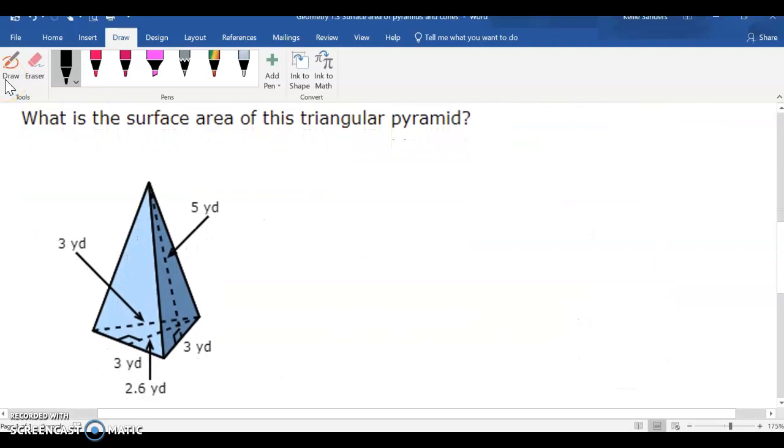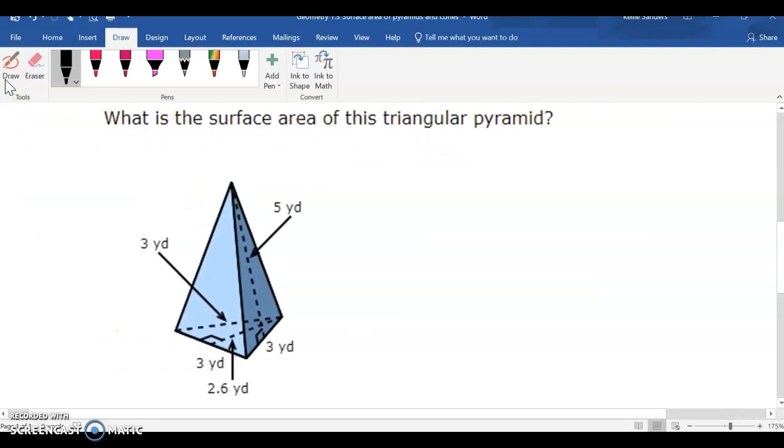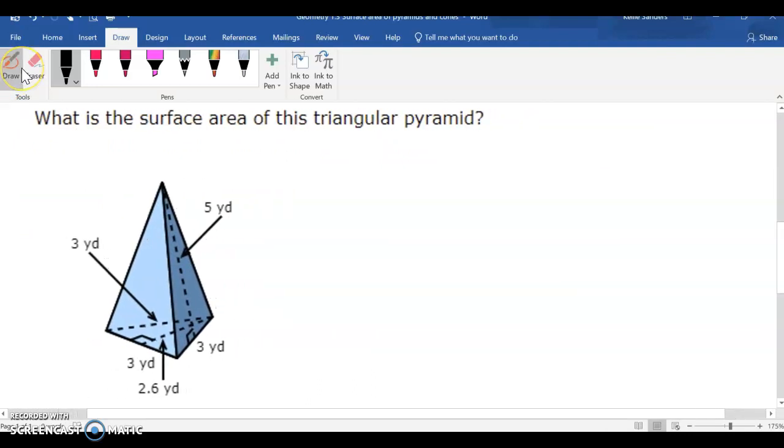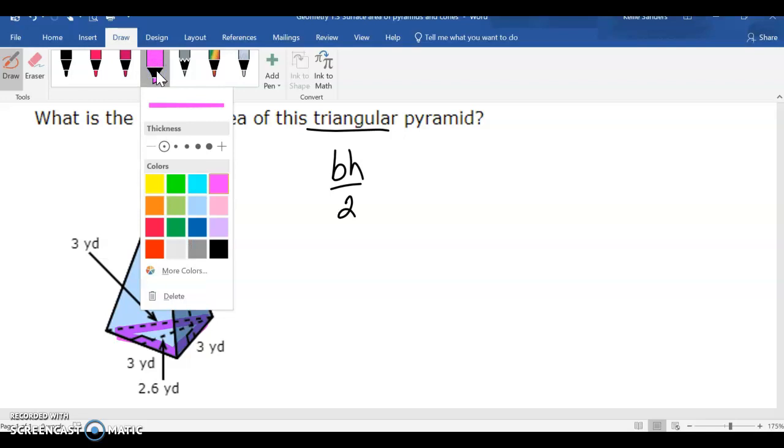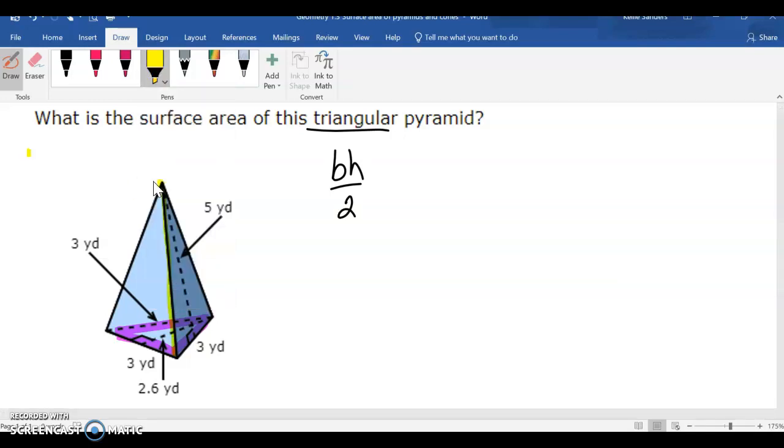Now, this is a triangular pyramid, so the base is a triangle. So, we're going to do base times height divided by 2 of the base, but then the other triangles, there are 3 of these, right? And then the back side.